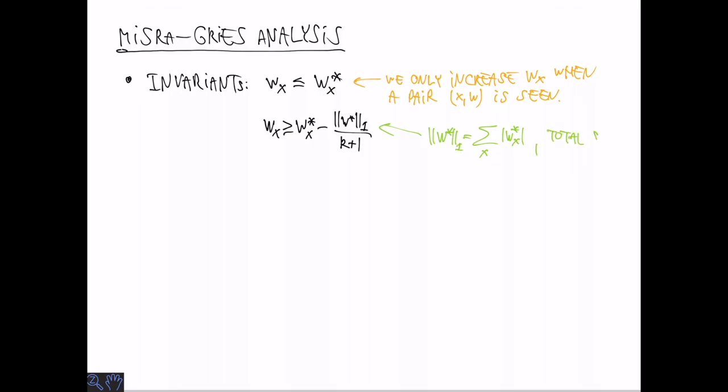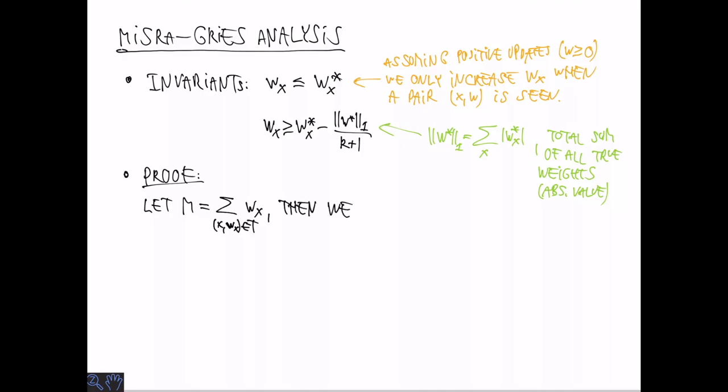Second we claim that the stored weight cannot be too much smaller than the true weight. The difference is the L1 norm of the true weight vector divided by k plus 1. The L1 norm is defined as the sum of absolute values of the entries. Here we are going to assume that all the entries are non-negative, so the absolute value doesn't really do anything, but that's the general definition. How do we argue for the lower bound on W_X? Let's consider the sum of all weights that we actually store in the sketch. Now we have a stronger claim, namely that W_X is going to be at least the true weight of X minus the L1 norm minus M divided by k plus 1. So here the L1 norm minus M can be thought of as the total weight of the discarded elements that are not present in the sketch.